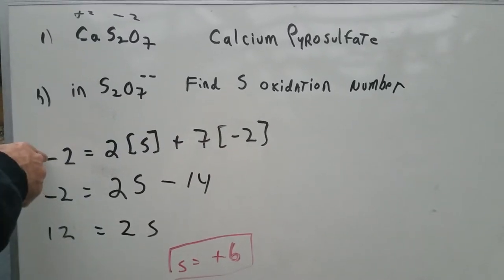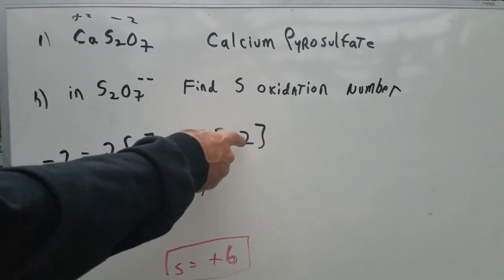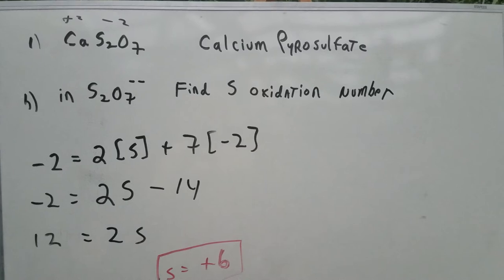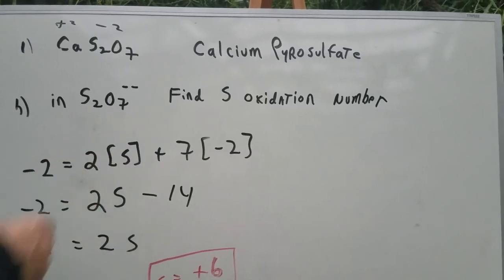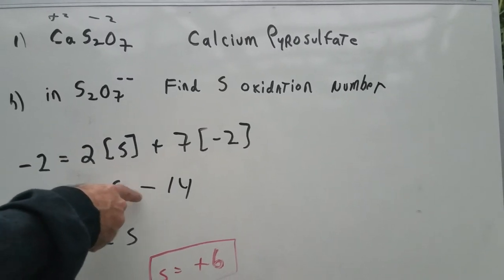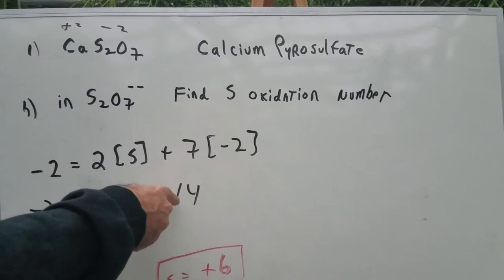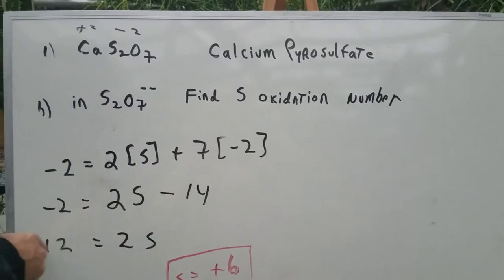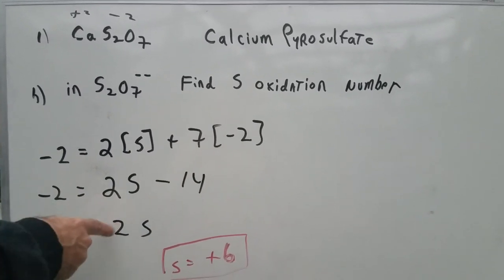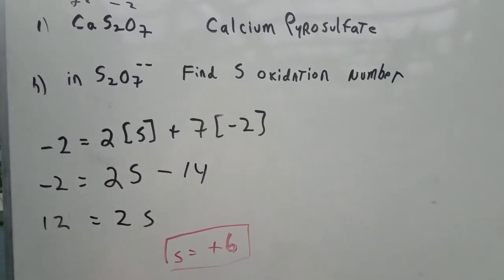Well, putting the numbers in, we have minus 2. We know the charge on oxygen is normally minus 2. And we want to find out the charge on the sulfur, so we keep that as our unknown. So we get minus 2 equals 2 times the charge on sulfur minus 14, which is 7 times minus 2, bringing the 14 to the other side. We get 12 equals 2S. Solving, you get sulfur in the plus 6 state.